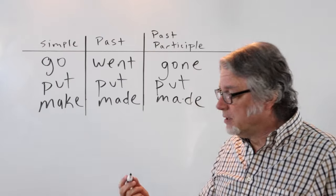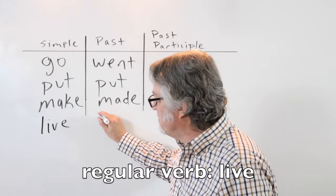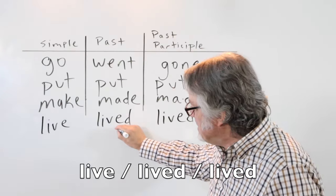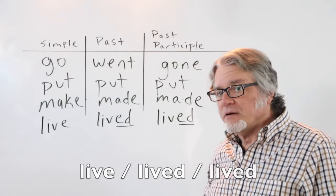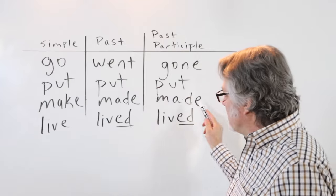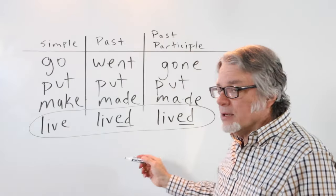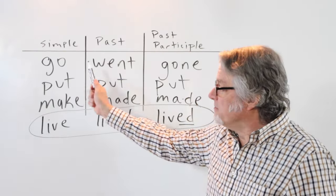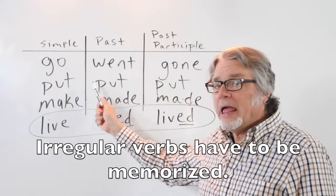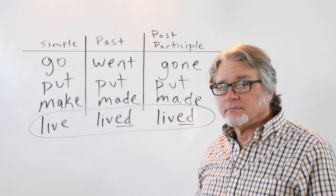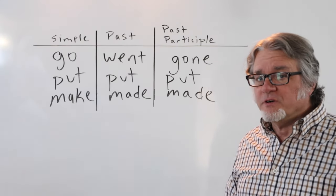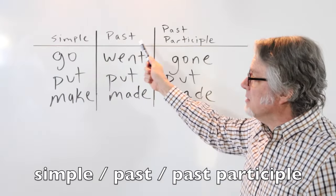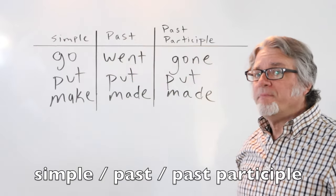When using a regular verb like 'live' — live, lived, lived — you only have to add the 'ed' or 'd' to the end of the verb, so these are fairly easy to form in the past tense. Irregular verbs and how they change from one form to another have to be memorized. Whenever you study irregular verbs, it's useful to know how they change from the simple form to the past tense and to the form of a past participle.